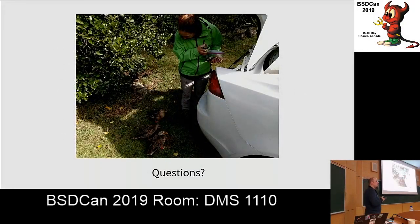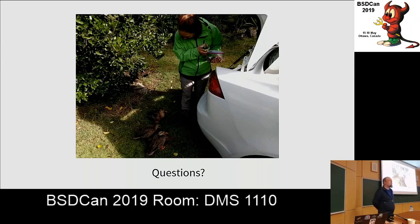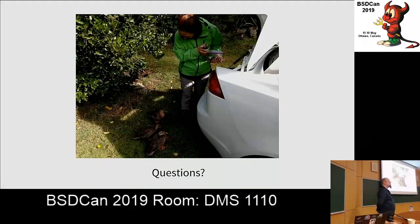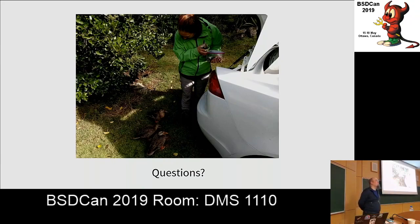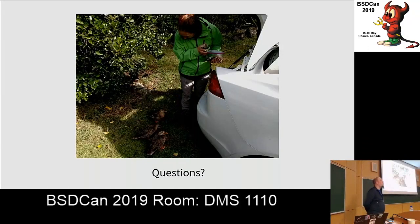Q: Are you aware of NLnet Labs' DNSSEC Trigger? A: The question was about NLnet Labs' DNSSEC Trigger — it's an implementation using unbound that detects via HTTP whether there is a captive portal and allows enabling validation over DNS over TLS. I was not aware of this, but I will have a look at it. It exists for Windows and Mac.